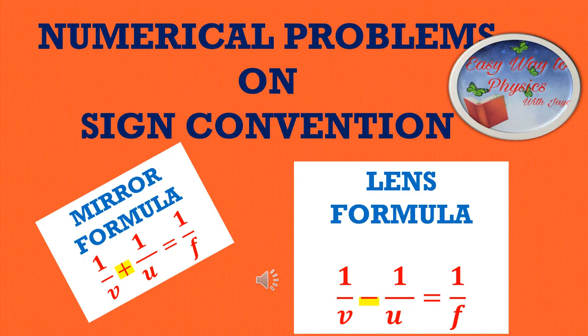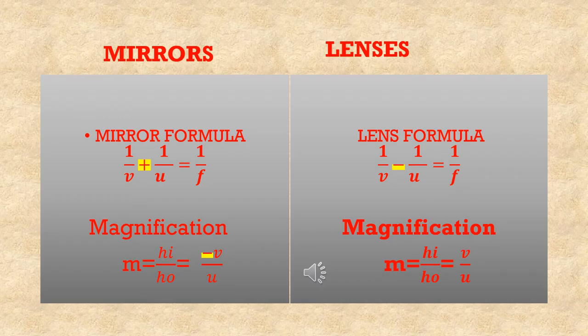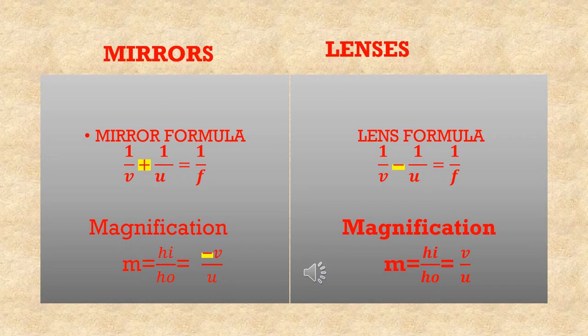Let's go over the formulas once again. Mirror formula is 1/V + 1/U = 1/F, where V is the distance of the image from the mirror, U is the distance of the object from the mirror, and F is the focal length of the mirror. Magnification for mirrors: M = HI/HO, where HI is the height of the image and HO is the height of the object.